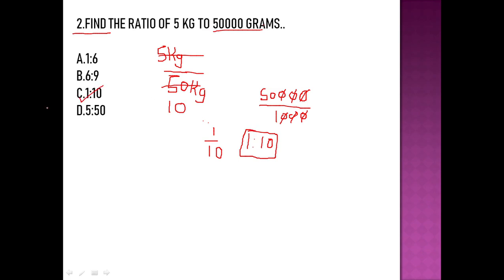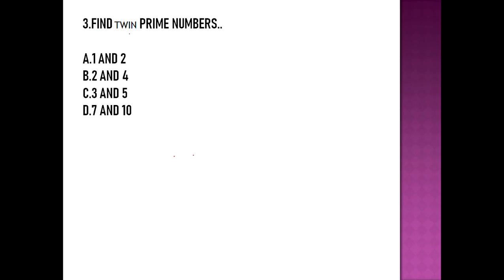The third question asks: find twin prime numbers. Twin prime numbers are two consecutive prime numbers that have a difference of two. Let's check the options. Option A: 1 and 2 — two is a prime number, but one is not a prime number, so option A is totally wrong. Option B: 2 and 4 — four is not a prime number, so option B is also wrong.